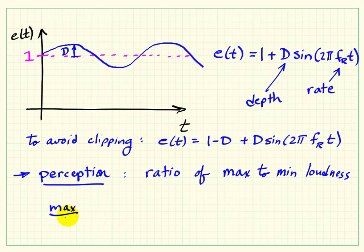These are distinct ideas from actual amplitude. If we consider the ratio of maximum to minimum, we could write this as the max value of 1 plus D divided by the min value of 1 minus D.